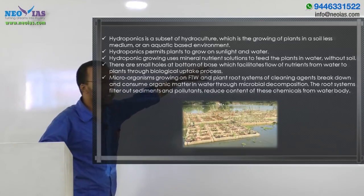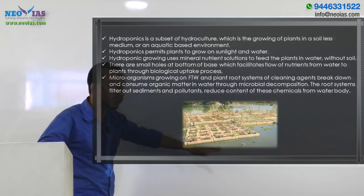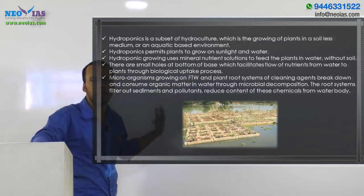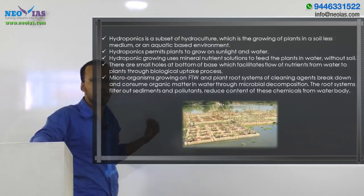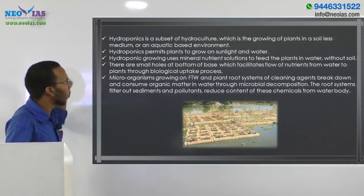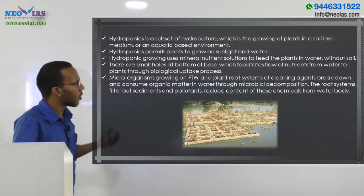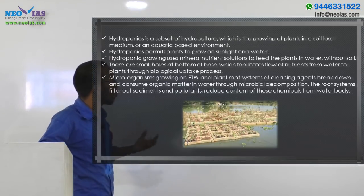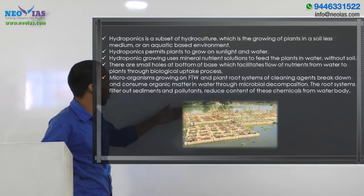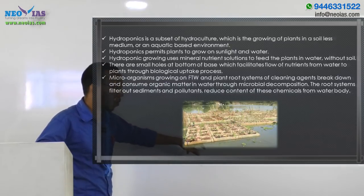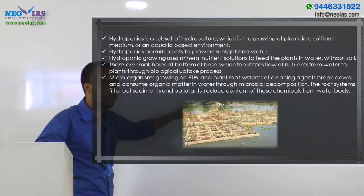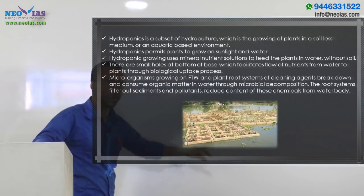The mineral nutrient solutions in the water body include minerals like nitrates and sulphides, which the plants absorb. There are small holes at the bottom of the base that facilitate the flow of nutrients from water to the plants through the biological uptake process. The roots of the plants absorb these nutrients from the water body through those holes.